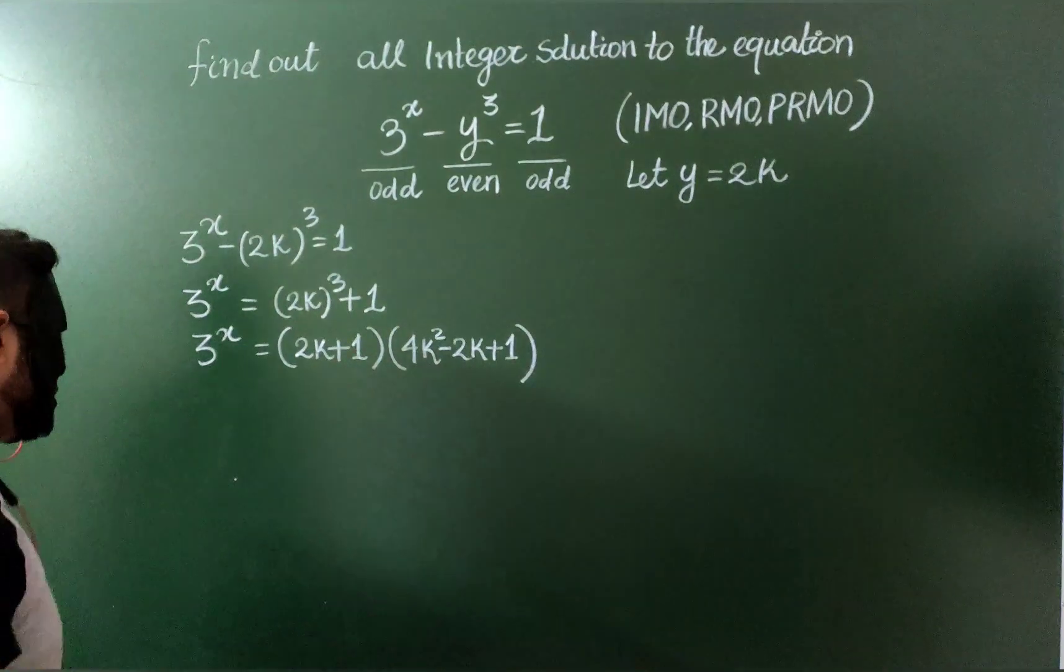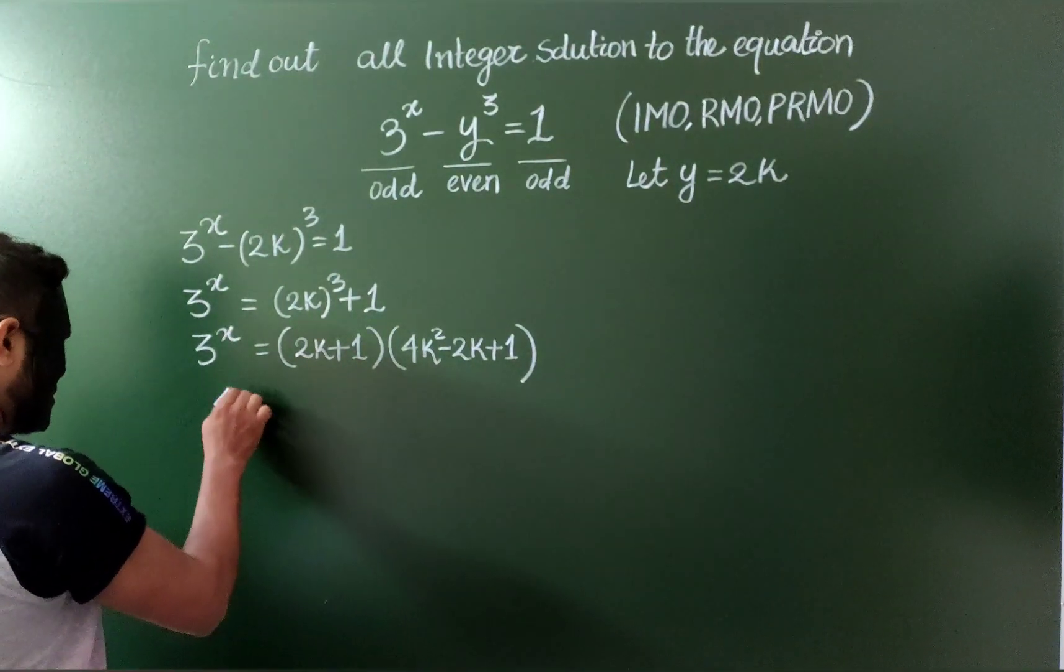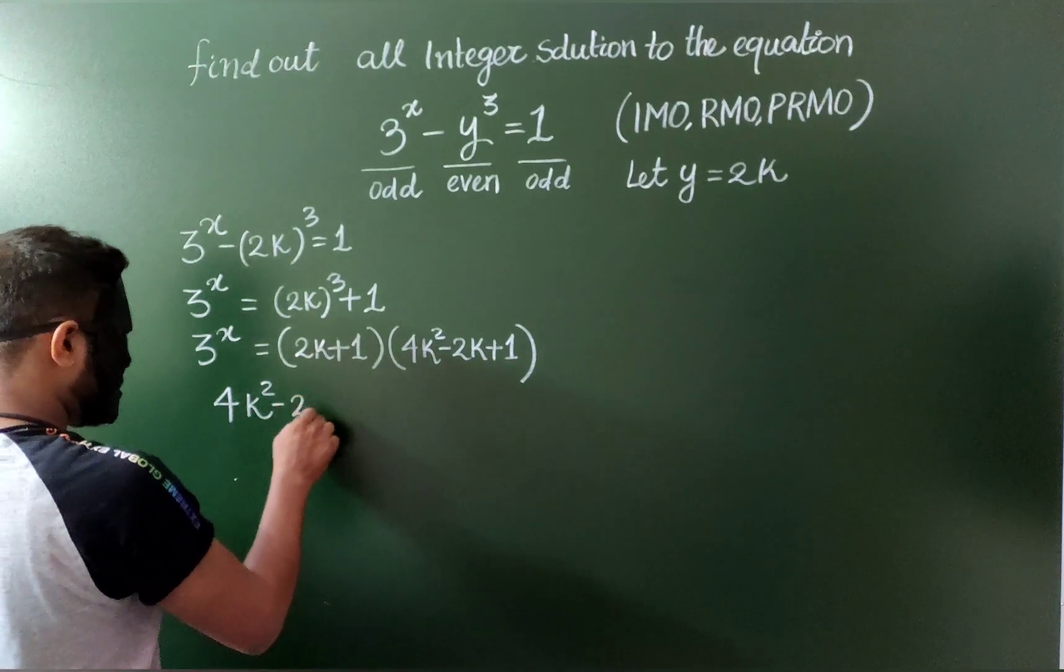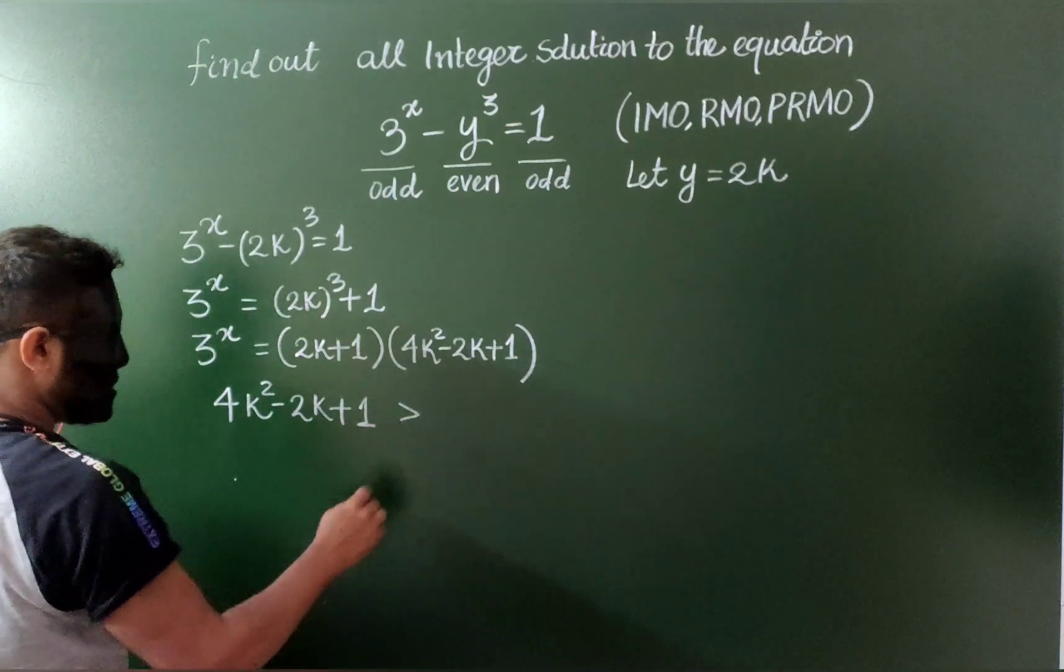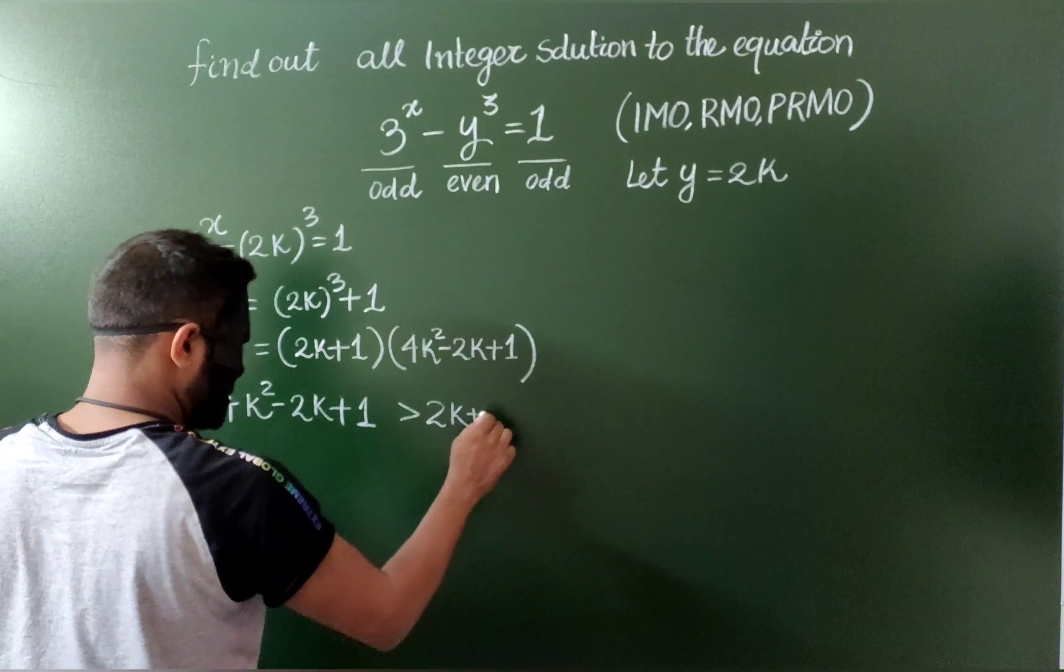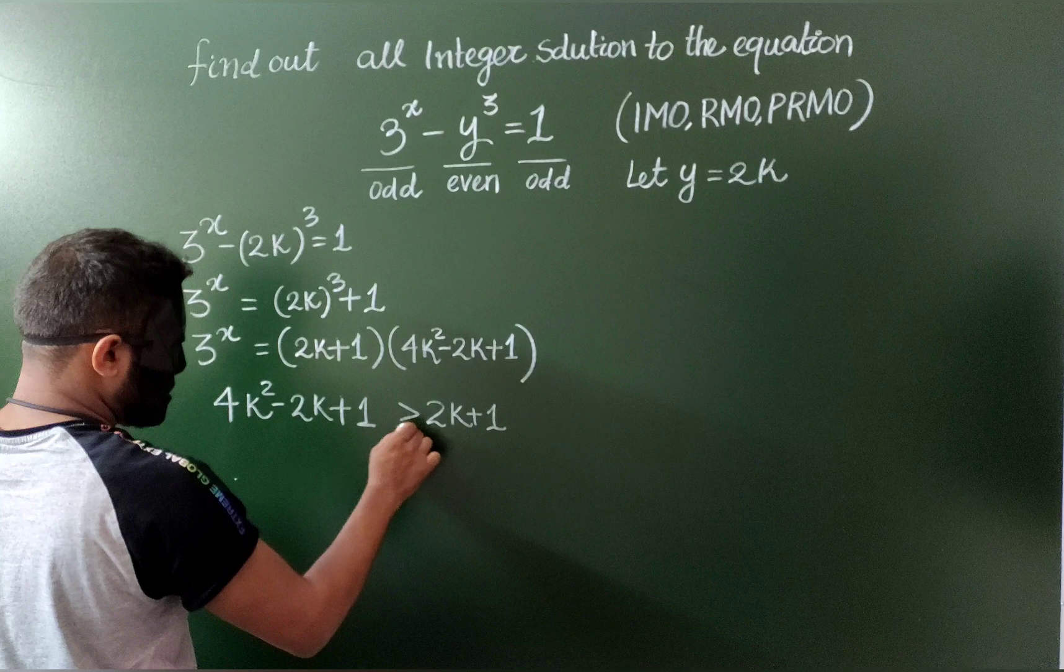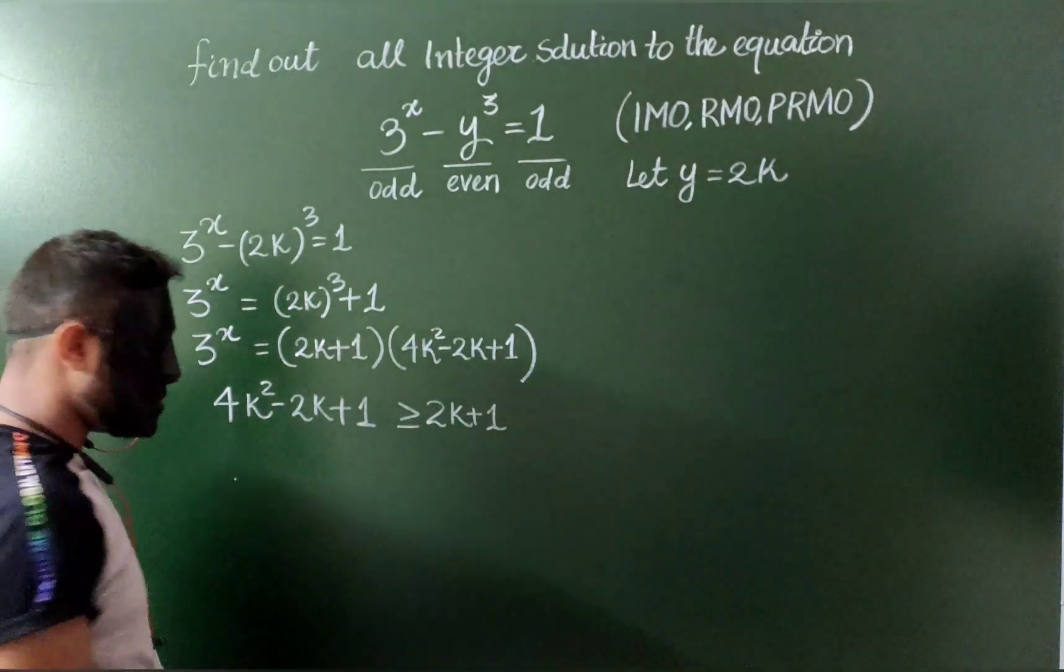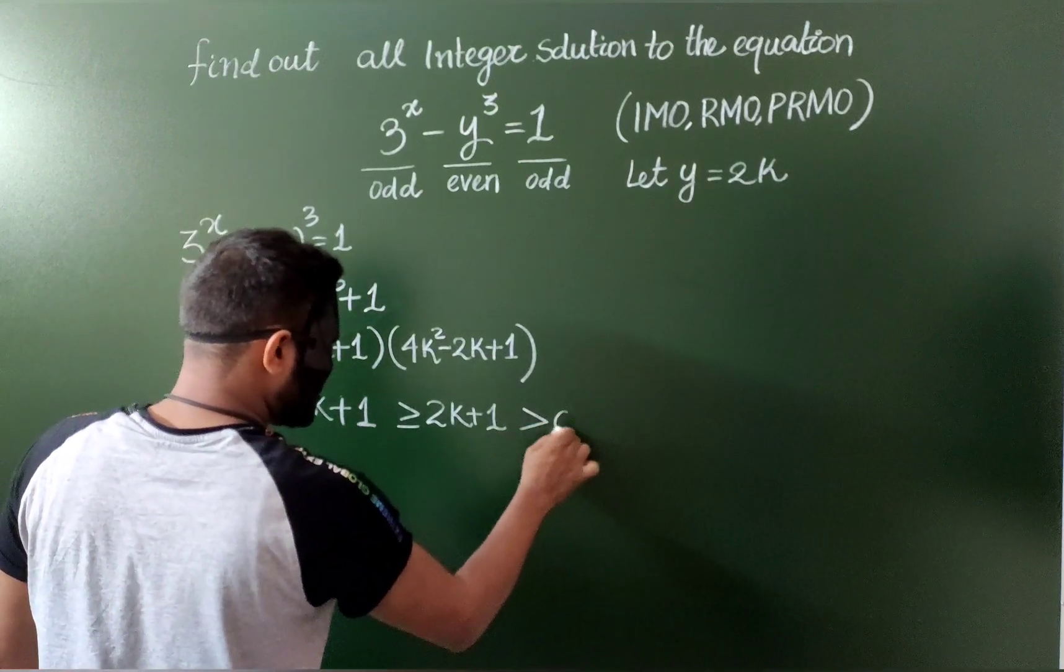And clearly 4k square minus 2k plus 1 is more than or equal to 2k plus 1. But when I consider k more than 0, this is the case, both are clearly more than 0.